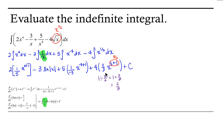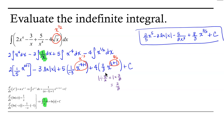So let's clean this up. We have 2/5 times x to the fifth power, minus 3 times the natural log of the absolute value of x, minus 5/3 times x cubed in the denominator — since x to the negative 3 is rewritten with x cubed in the denominator. Then 4 times 2/3 is 8/3, times x to the 3/2 power, plus c. And there's our antiderivative. I hope you find this helpful.